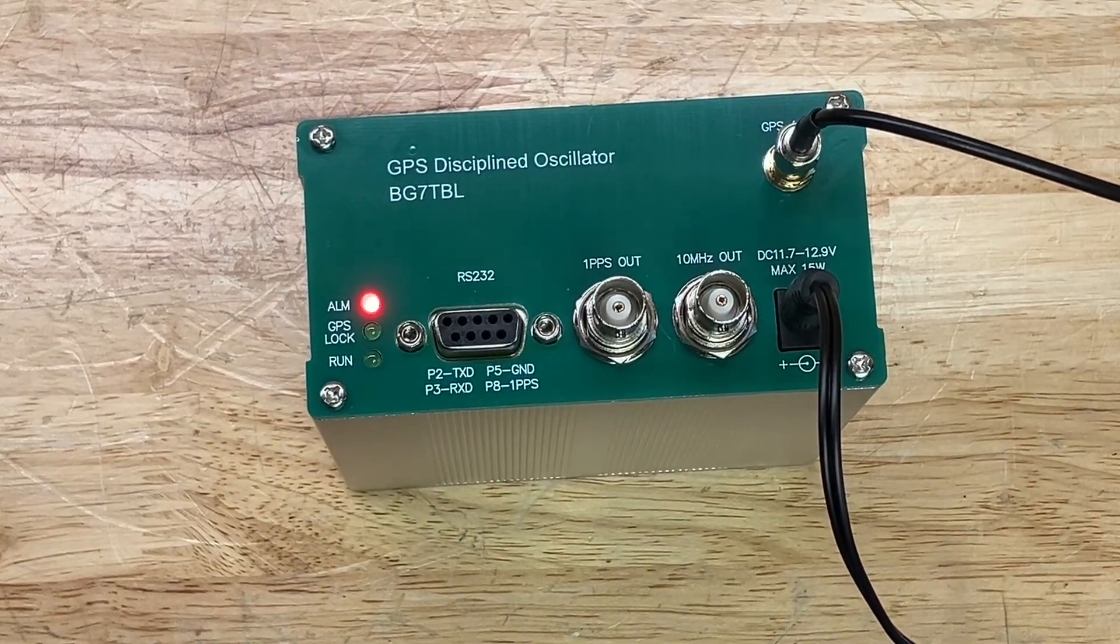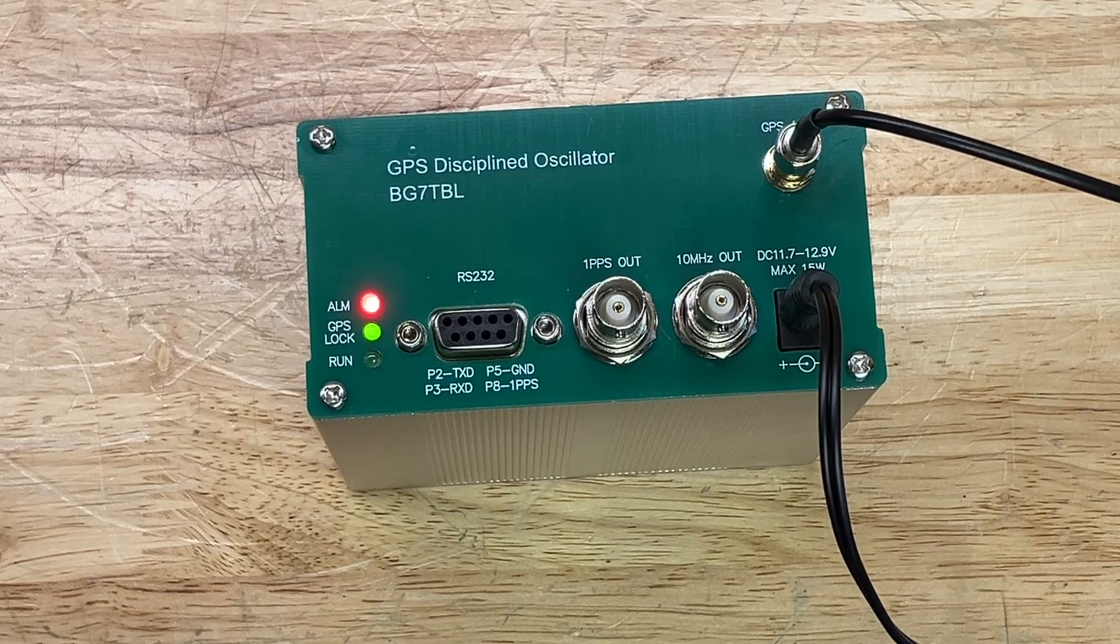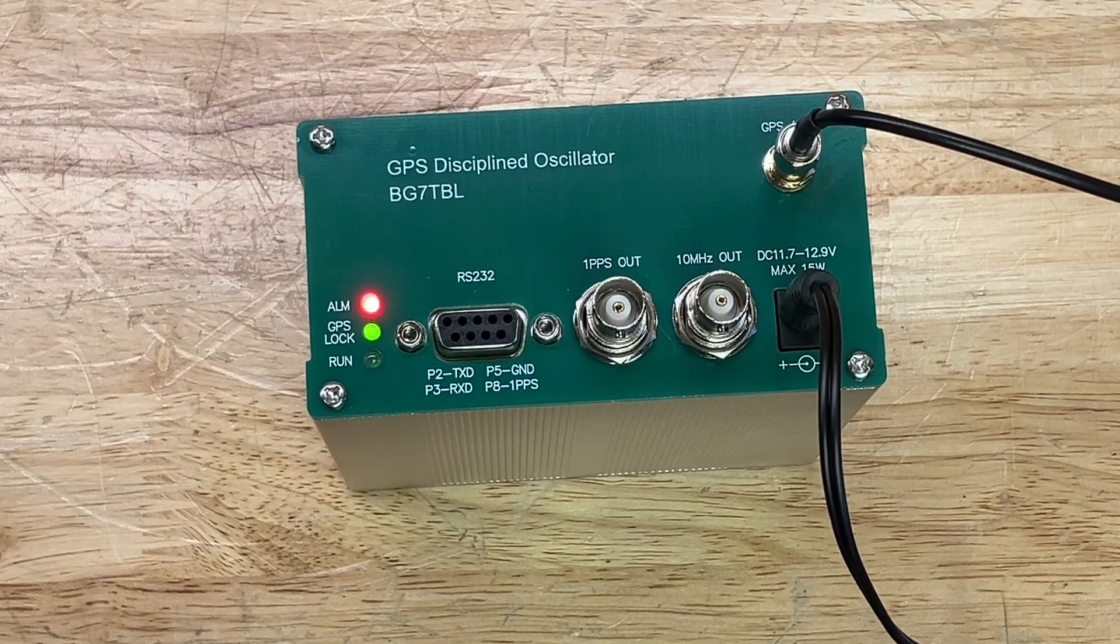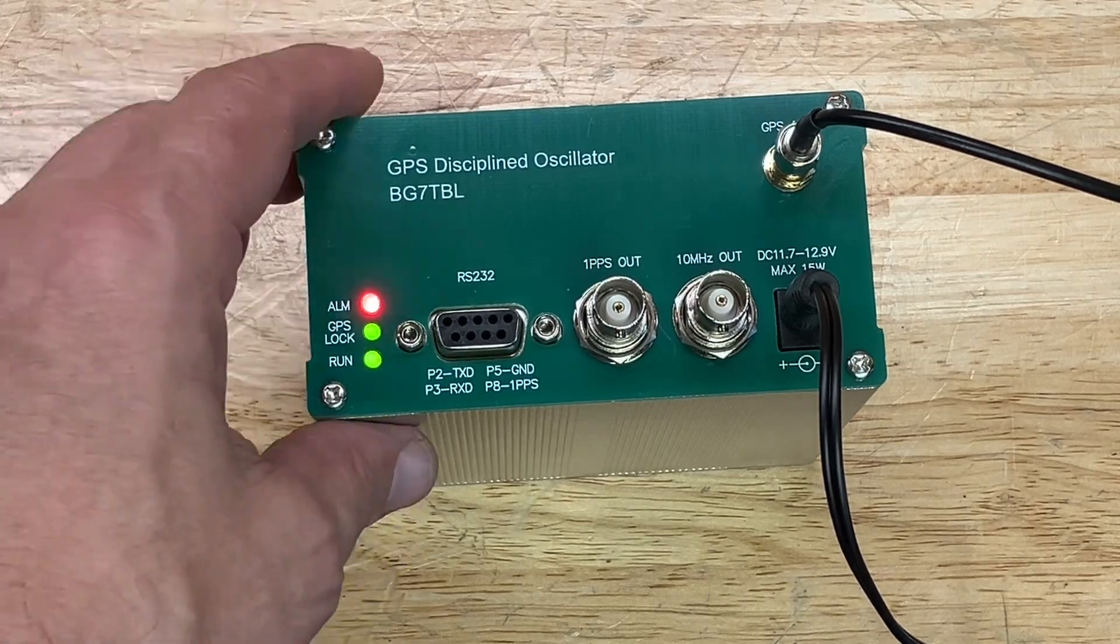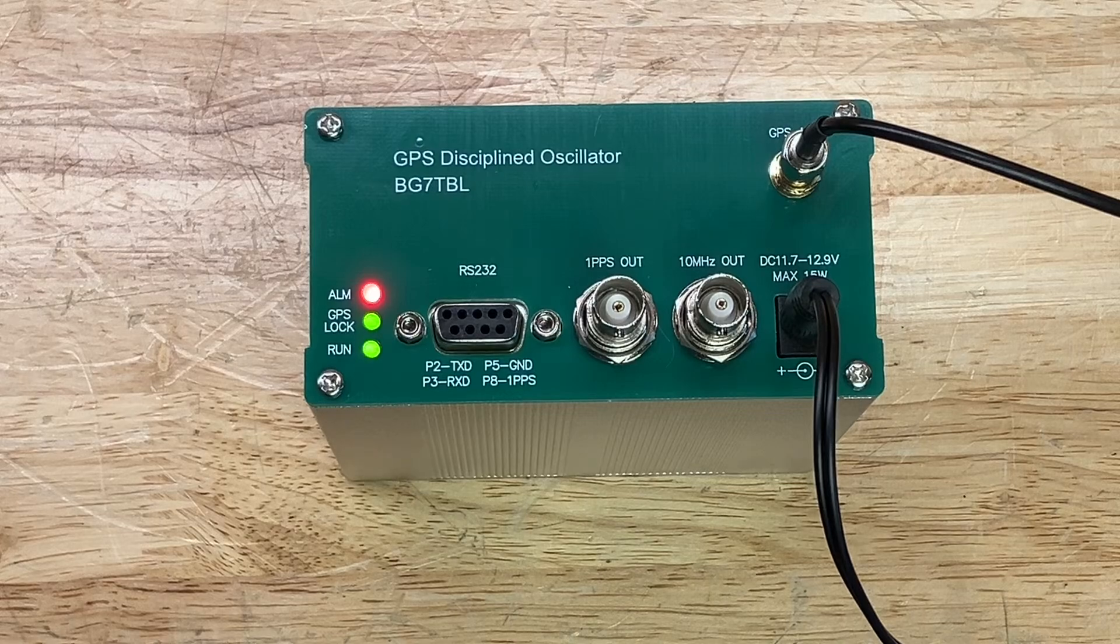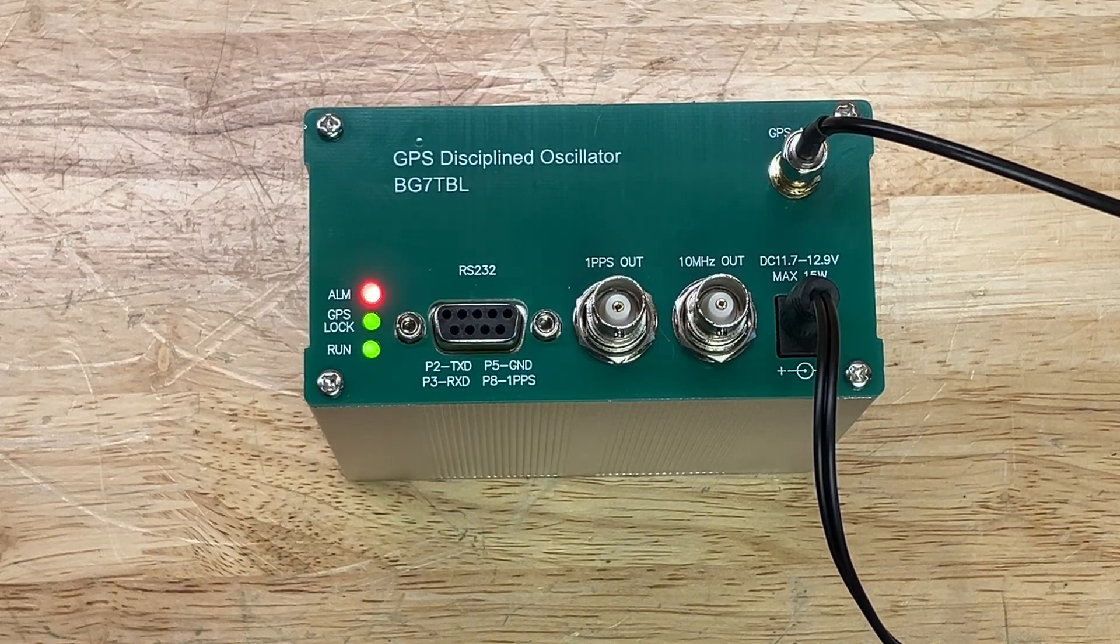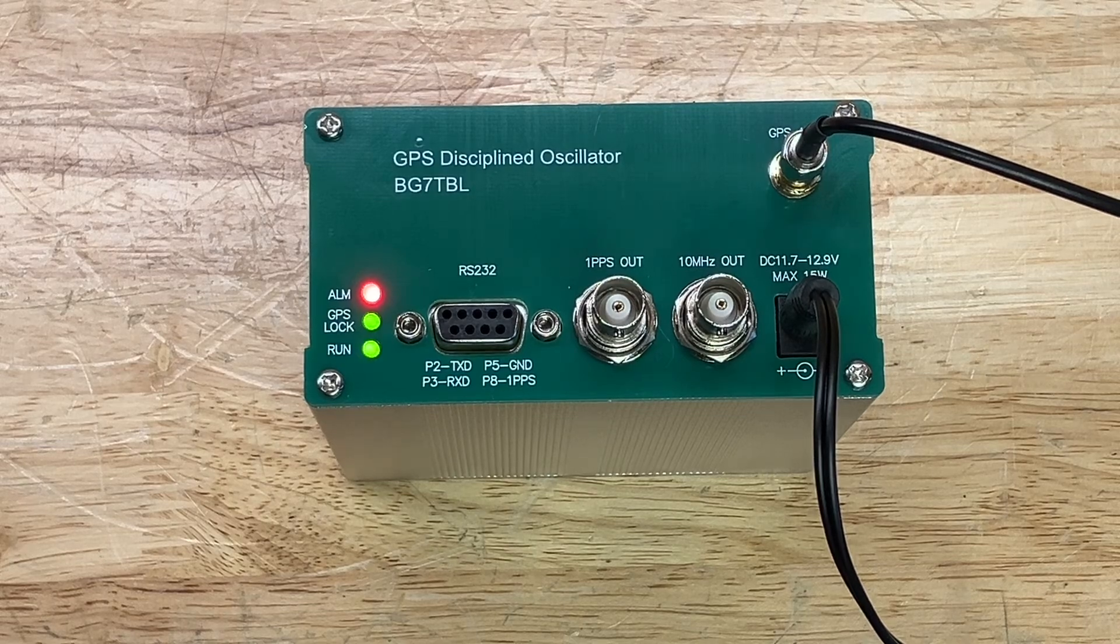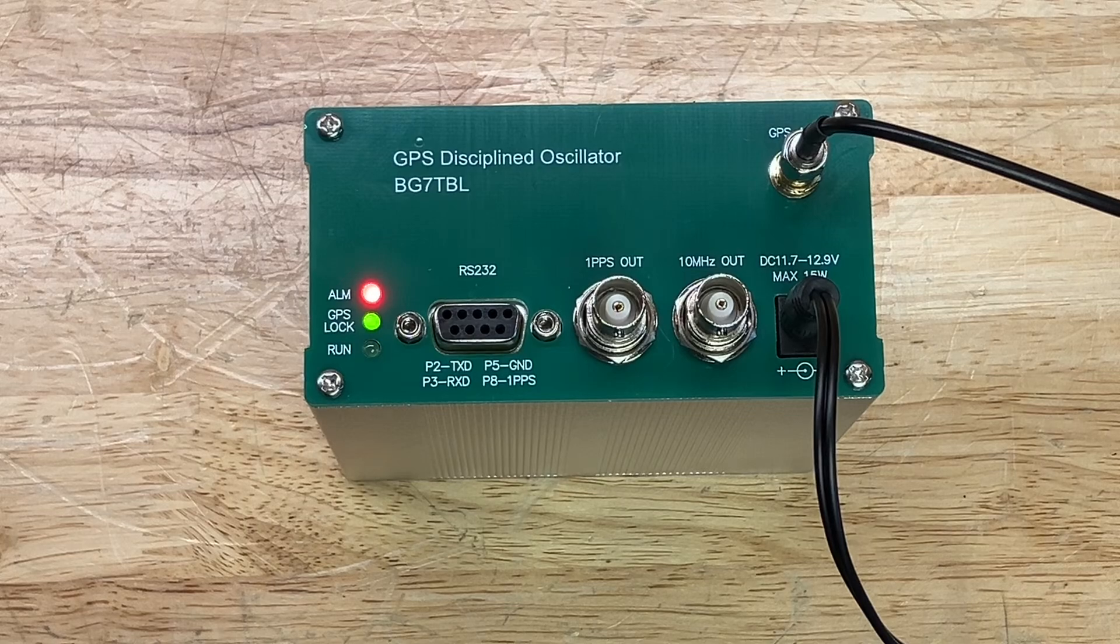Okay. So we have a red alarm light, flashing run light and a solid GPS lock light. I don't know what any of these lights mean, but let's give it a minute and see if anything changes. Also, I'd like to hook it up to my frequency counter and take a look and see what kind of output we get here.